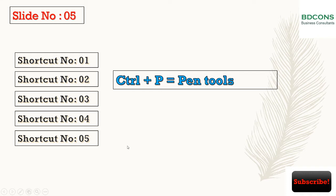Shortcut 2: Pen tools. Press Ctrl+P and you will get the pen tools. You can draw on your slideshow display to mark or identify what you need. To remove the pen tools, press Ctrl+P again.